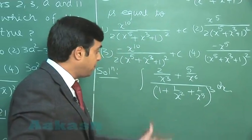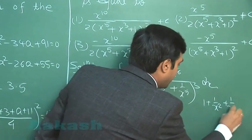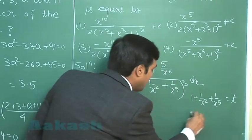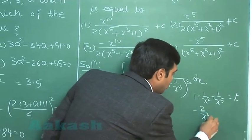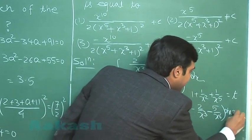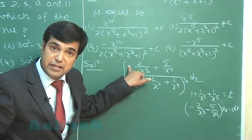Now if I plan to put this term 1 plus 1 by x^2 plus 1 by x^5 as t, I can see here minus 2 by x^3 minus 5 by x^6 dx is equal to dt, which is already available in numerator.